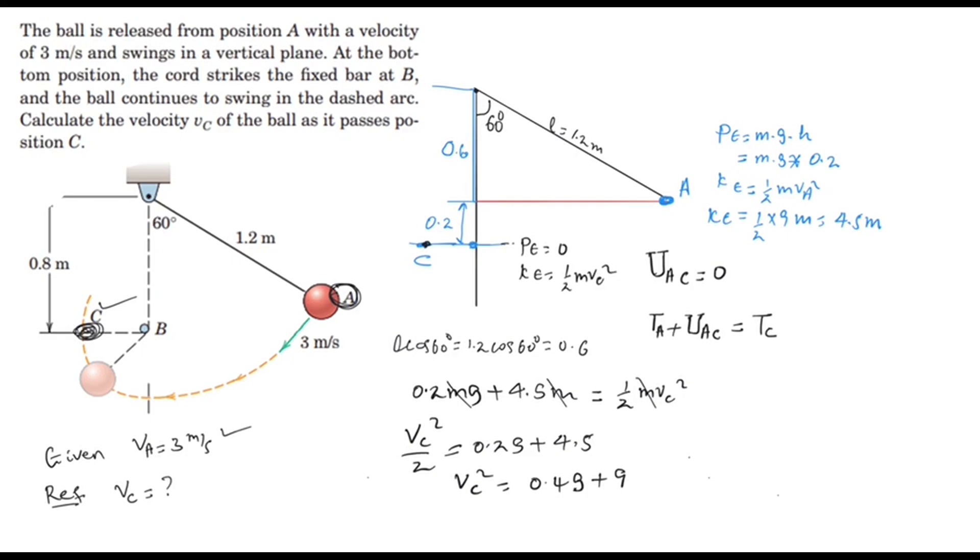If we substitute the value of g, we can get that part. This equals 0.4 times gravity, which is 9.81, plus 9.